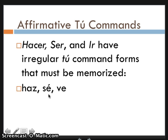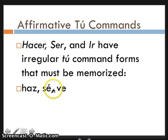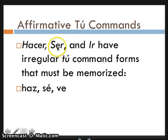The yo form of the verb 'saber,' by the way, is also 'sé.' So when you see 'sé' in a sentence, you just have to look at context and ask: is somebody giving a tú command, or is somebody saying 'I know how to do something'? Usually when people use 'sé' in the affirmative way they'll say 'yo sé,' which helps you understand they mean 'I know' instead of a tú command. So to recap: 'hacer' becomes 'haz,' 'ser' becomes 'sé,' and 'ir' becomes 've.' You need to memorize those.